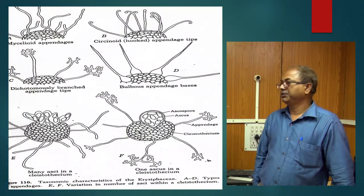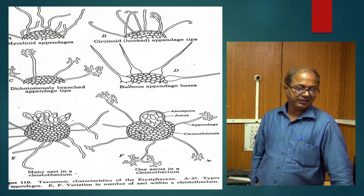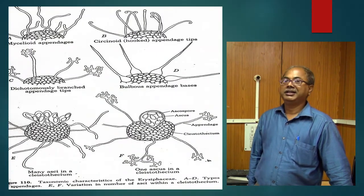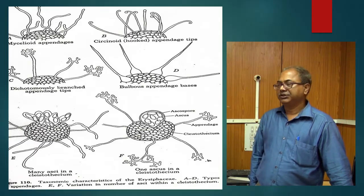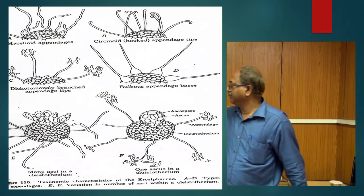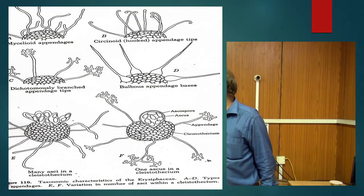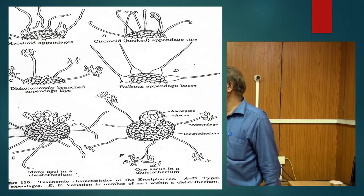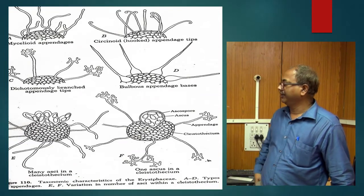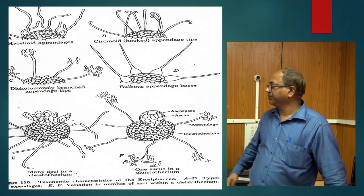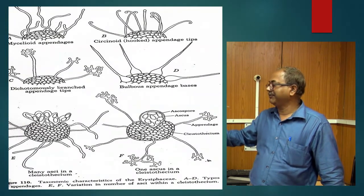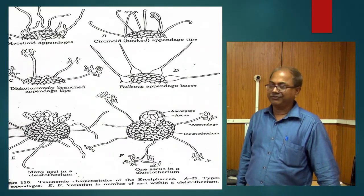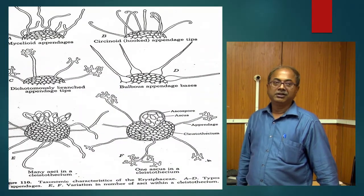Regarding the powdery mildew fungus Erysiphe, you can identify it by its cleistothecia, which are completely closed ascocarps. The myceloid appendages are a distinguishing character of the genus Erysiphe. While in other genera appendages are cirscinoid or dichotomously branched, in Erysiphe they are mycelioid appendages, which is the diagnostic feature of the cleistothecial appendages of the Erysiphe genus.